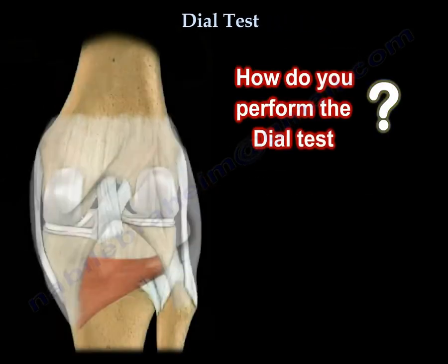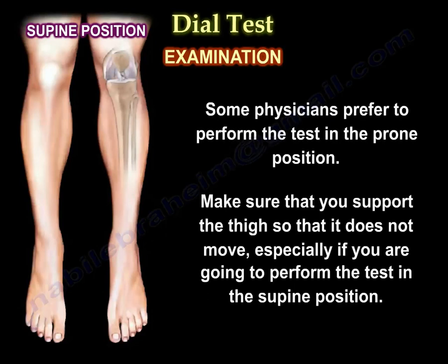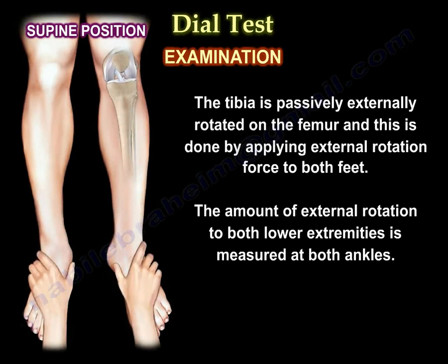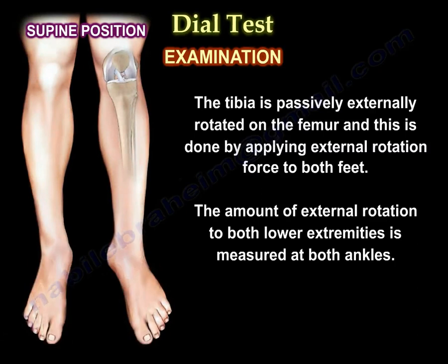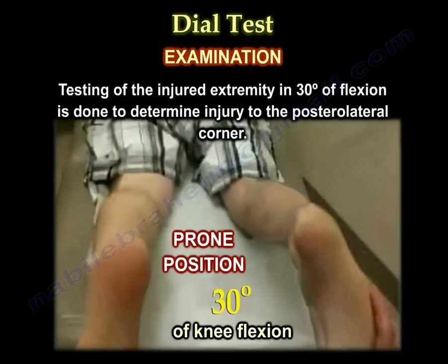The Dial Test can be performed with the patient supine or prone. Both knees are placed in 30 degrees and 90 degrees of flexion. Some people prefer the prone position. Make sure to support the thigh so it doesn't move, especially in the supine position. The tibia is passively externally rotated on the femur by applying external rotation force to both feet, and the amount of external rotation to both lower extremities is measured at both ankles.